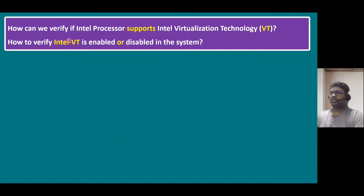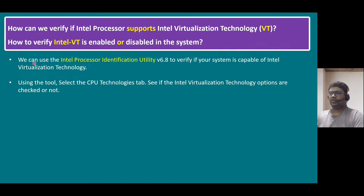The first two questions share the same answer: how to verify if an Intel processor supports Intel Virtualization Technology (VT), and how to verify if Intel VT is enabled or disabled. We can use Intel Processor Identification Utility version 6.8 to verify if our system is capable of Intel VT. Using this tool, select the CPU Technologies tab, and we can see if the virtualization technology options are checked or not. If checked, it is supported; if unchecked, it is not supported.